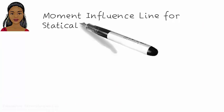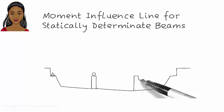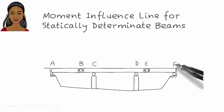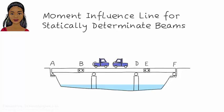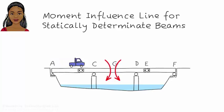Moment influence lines for statically determinate beams. Consider this bridge — it is designed to carry moving loads. You are asked to determine vehicle locations on the bridge that lead to maximum bending moment in member CD. With regard to bending moment, the critical location in the beam is mid-span. Bending moment at point G is generally larger than at any other point in the beam segment. But the value of bending moment at G changes as a vehicle moves across the bridge. So exactly where should the vehicle be for the bending moment at G to reach its maximum value?